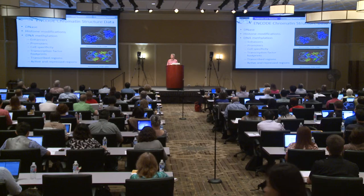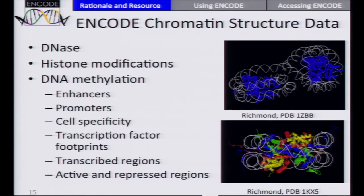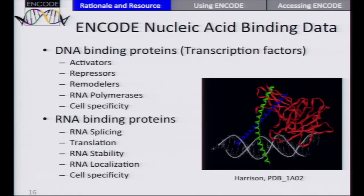We're also carefully looking at chromatin structure, which has been intimately connected to gene regulation for a number of years. We collect data using DNase, histone modifications, and DNA methylation, which primarily tells us about where regulatory regions are — enhancers and promoters. The data are cell-specific, giving us information about in what cell type events are happening. We're also collecting information about where proteins are bound to nucleic acids, using DNA binding proteins — especially transcription factors — which tells us about transcriptional regulation, transcriptional start sites, and regulatory elements. This phase of ENCODE also includes proteins bound to RNA, which tells us about splicing, translational regulation, and stability.